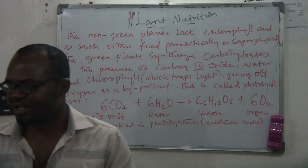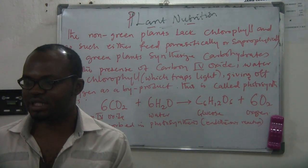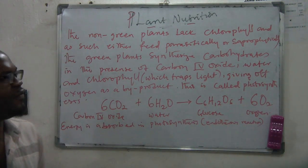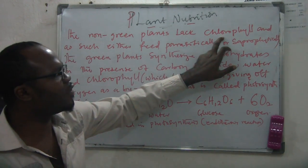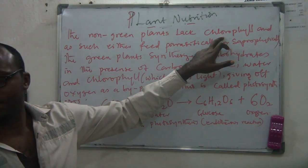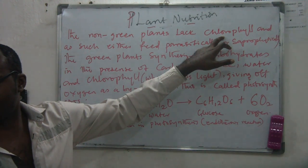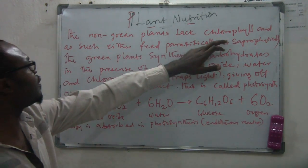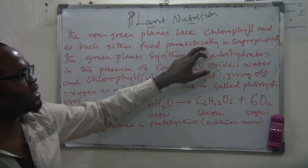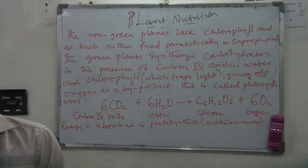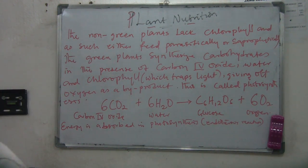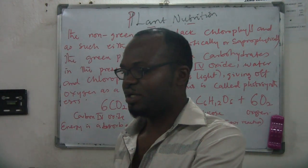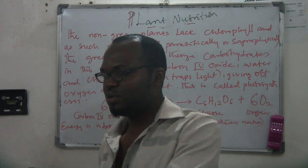For a plant to do photosynthesis, it must be green in color. So what of those plants that are non-green? How do they feed? The non-green plants lack chlorophyll. Chlorophyll is the green pigment on plants that gives them their green color. So non-green plants lack chlorophyll and as such either feed parasitically or saprophytically.